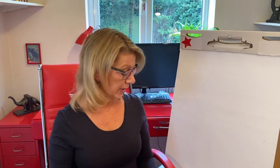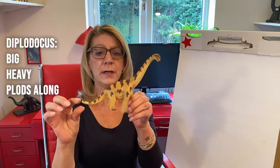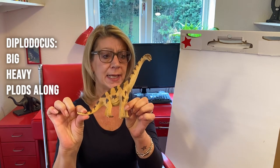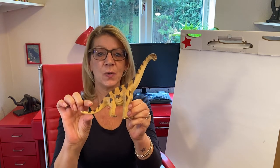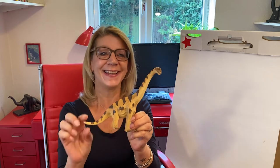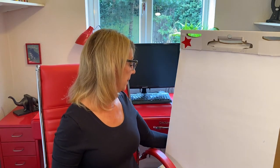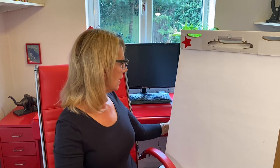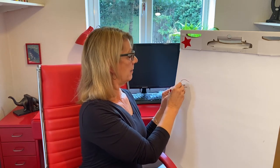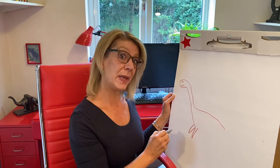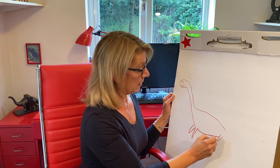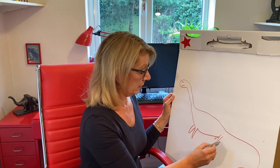So let's start by looking at our Diplodocus — big, heavy, and plods along rather nicely. There was a Monty Python sketch many years ago where someone had a theory that the dinosaur was thin at one end, thick in the middle, and thin again at the other end. So I'm going to have a go at drawing a dinosaur now. Here's my Diplodocus: we start with a head and we'll make him a smiley dinosaur — small head, then a long neck, then quite a big body, some legs, and then this very long tail.